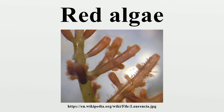Morphology. Red algae have double cell walls. The outer layers contain the polysaccharides agarose and agaropectin, which can be extracted from the cell walls by boiling as agar. The internal walls are mostly cellulose.